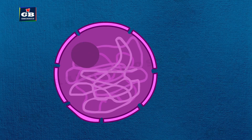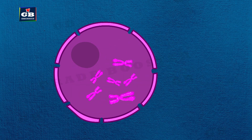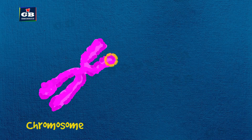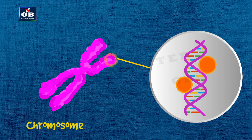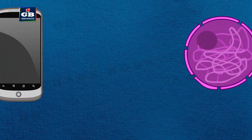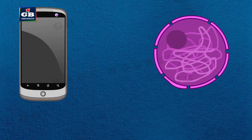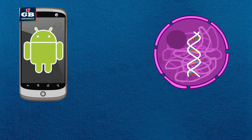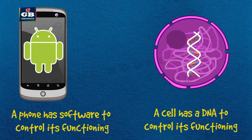Do you know how chromatin looks? It just looks like a tangled thread, but it changes into rod-like structures called chromosomes during cell division. Chromosomes contain DNA and protein. Let us look at an example to understand the functioning of chromosomes.